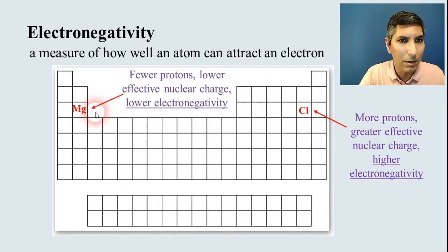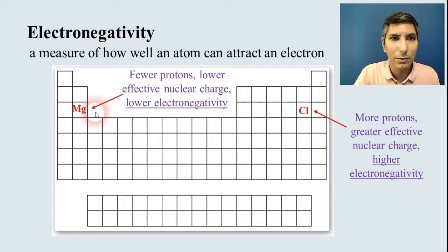On the other hand, magnesium over here has fewer protons. So it's going to have a lower effective nuclear charge, a lower electronegativity.